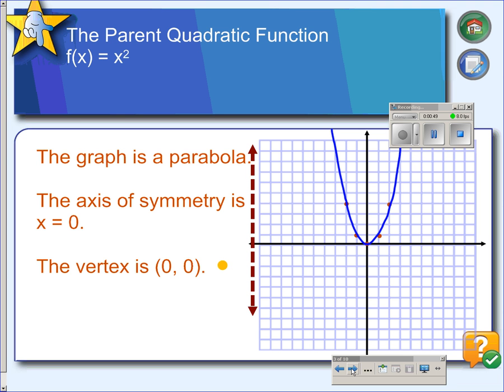This parent function has some features. First of all, this graph is called a parabola, and the parabola has an axis of symmetry. The axis of symmetry for the parent function runs through the line x equals 0. And you should know from geometry that symmetry means you have some mirror imaging. So the left side is a mirror image of the right side.